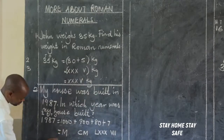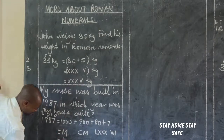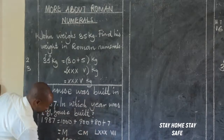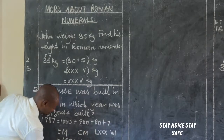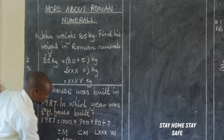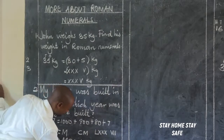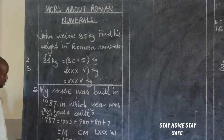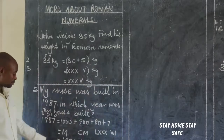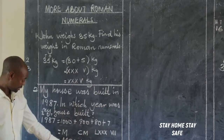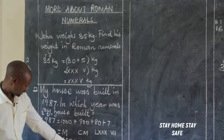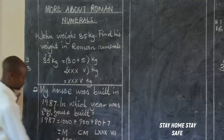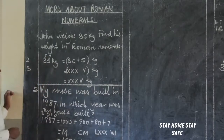Bringing these together: M, C, M, L, X, X, X, V, I, I. Therefore, our answer for 1987 is MCMLXXXVII.